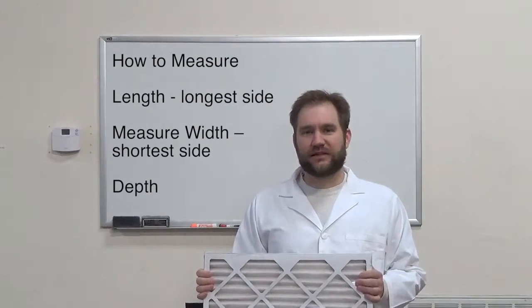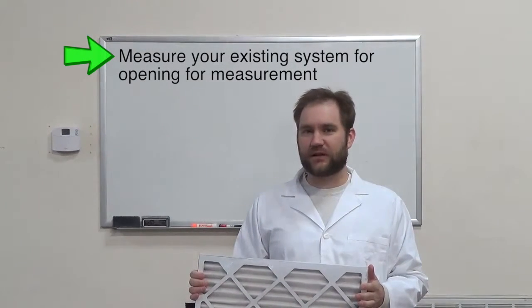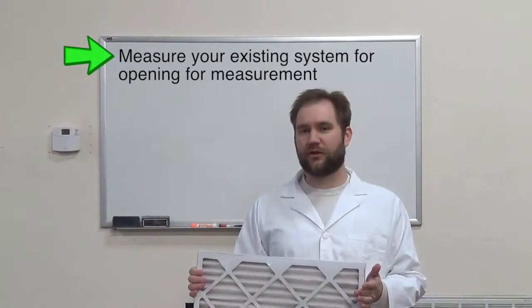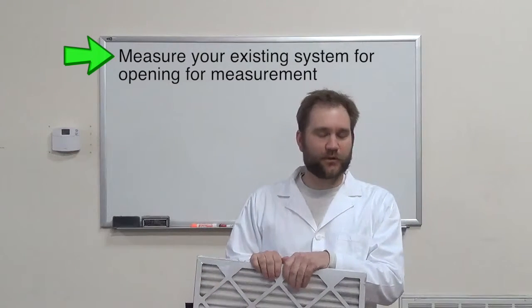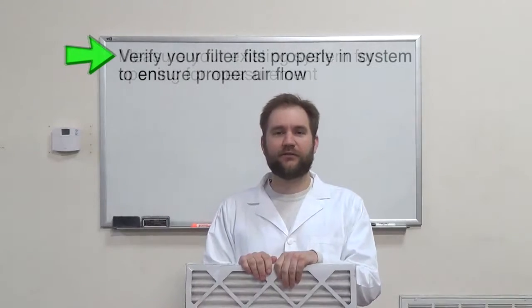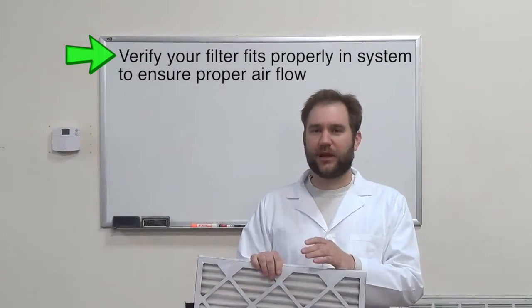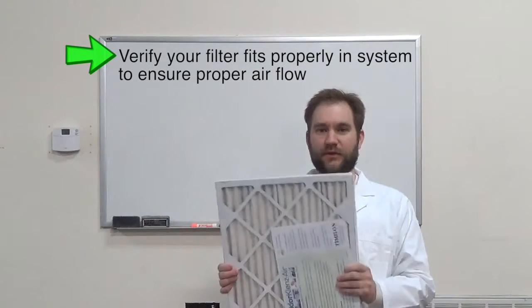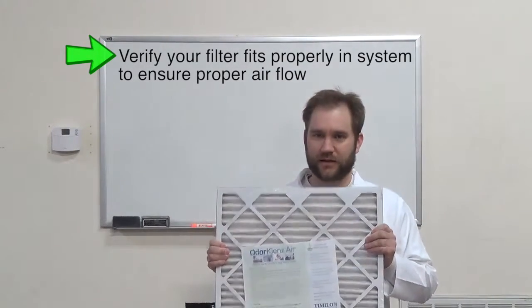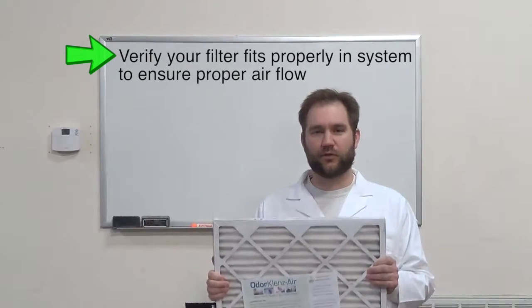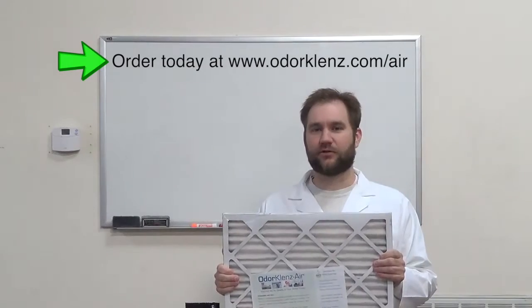A couple other ways you can do this: you can also take a look at your system and measure those same dimensions at the air handler or the return air register. And if you do have an air filter already in your system, which hopefully you do, go ahead and verify that it fits properly within the system. You don't want air to be able to easily go around the air cartridge because you need to ensure that the contaminants you're wanting to remove, the odors, are coming into contact with the materials inside of our air cartridge. Thank you.